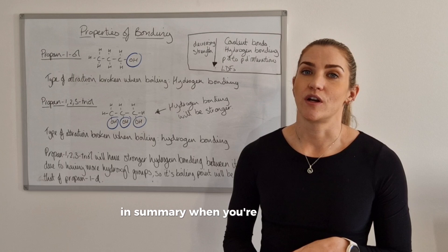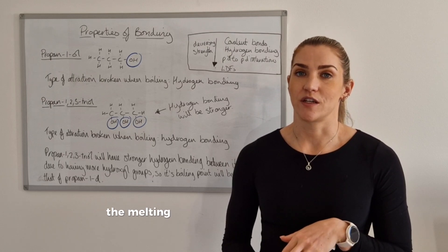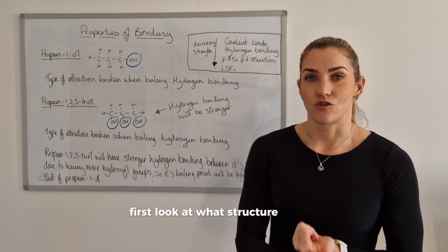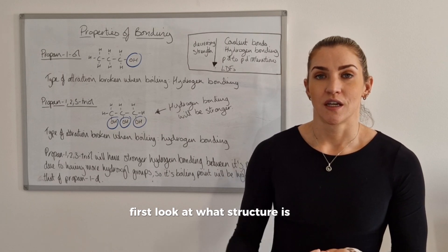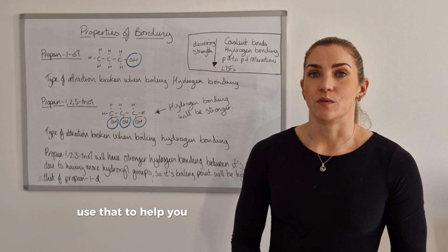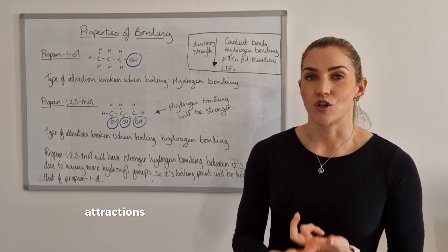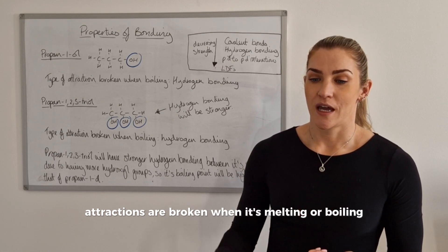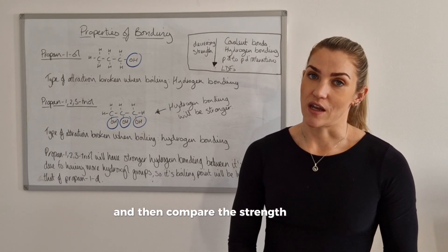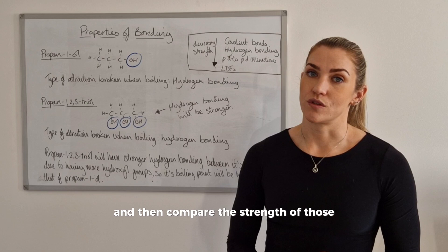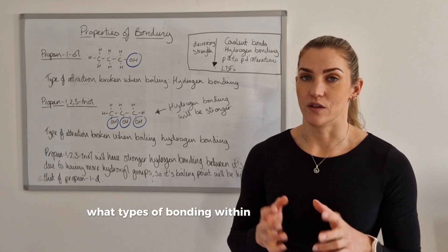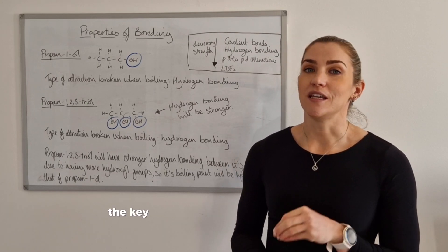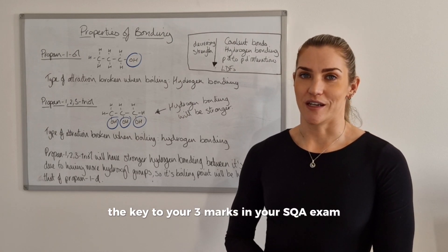In summary: when asked about the melting or boiling point of a substance, first identify its structure, then use that to work out what types of bonds or attractions are broken when it's melting or boiling, and then compare the strength of those interactions between the two substances. That should be the key to your three marks in your SQA exam.